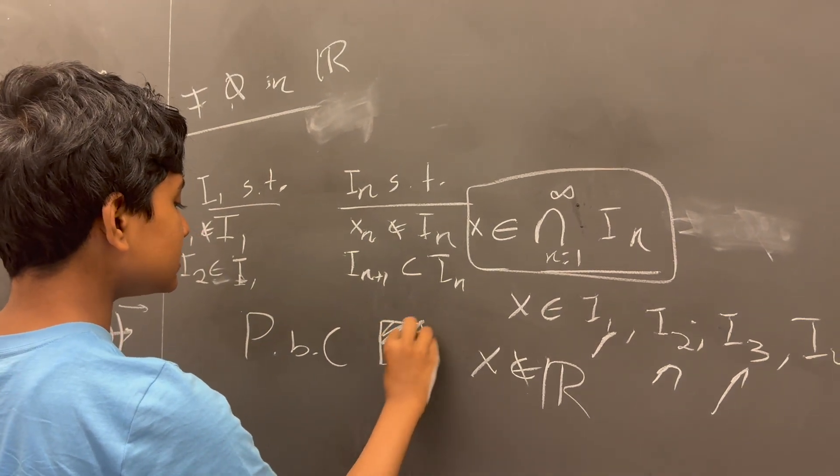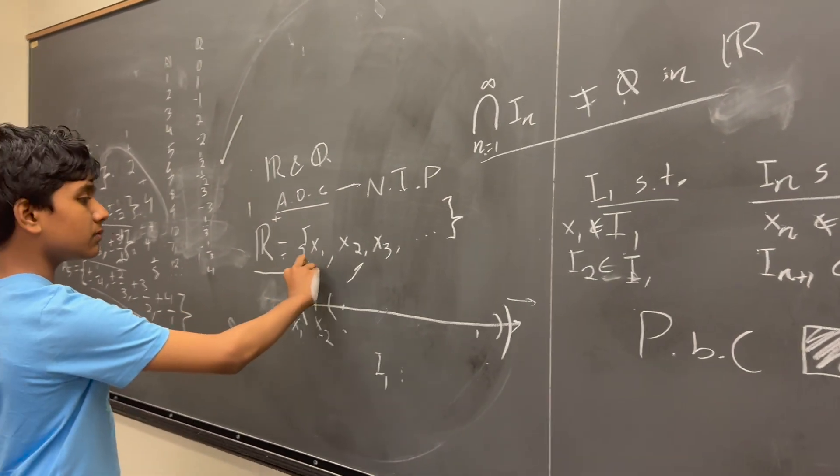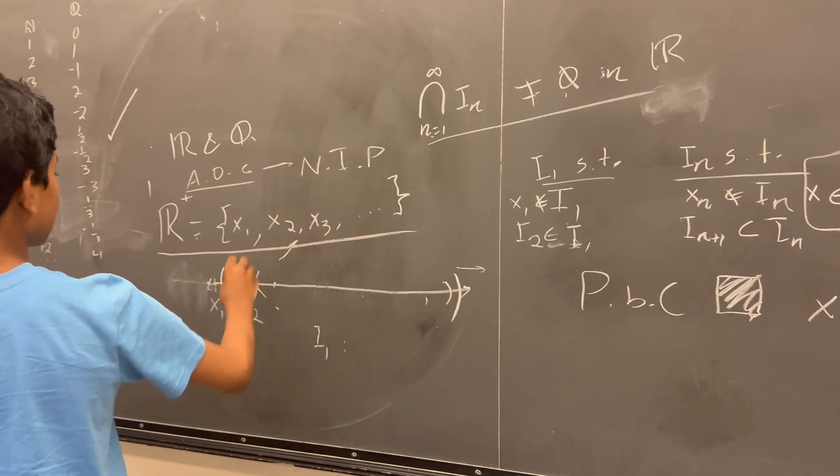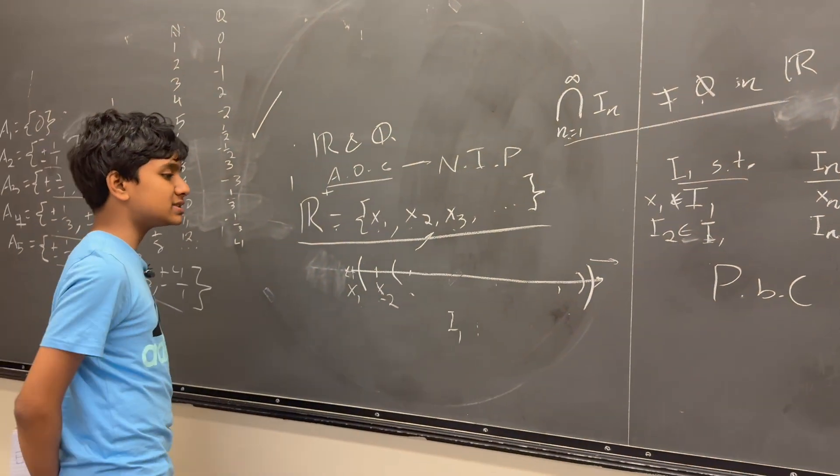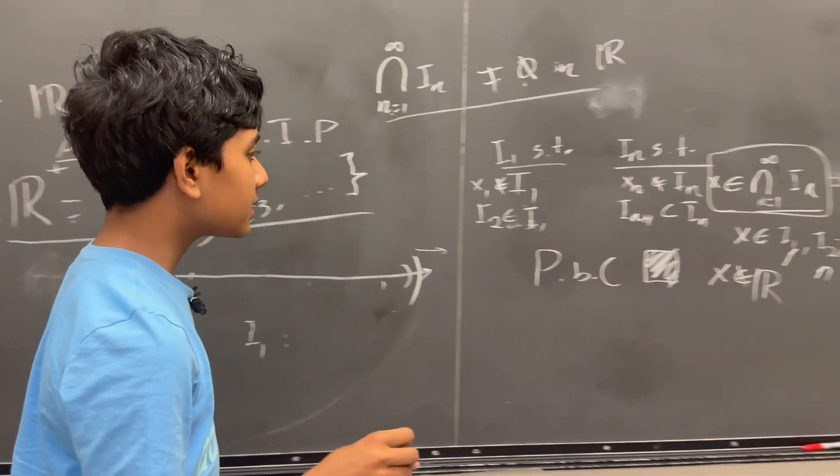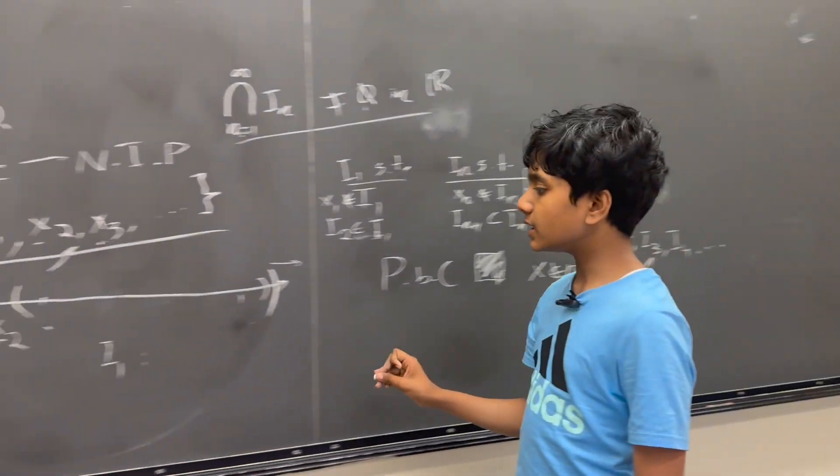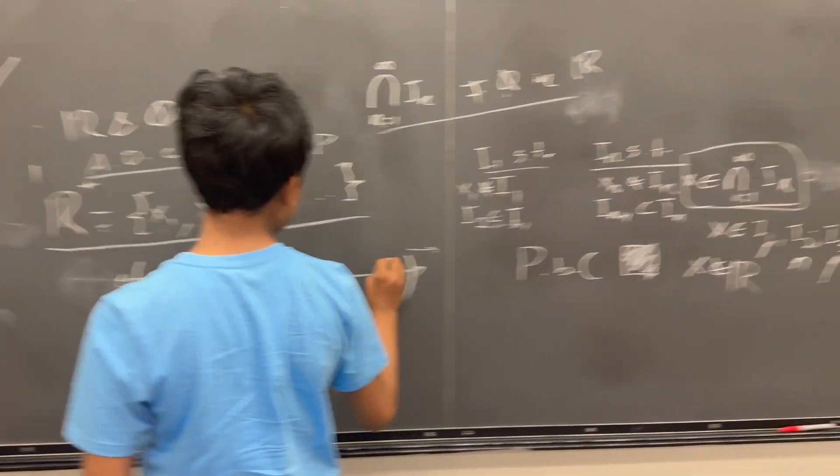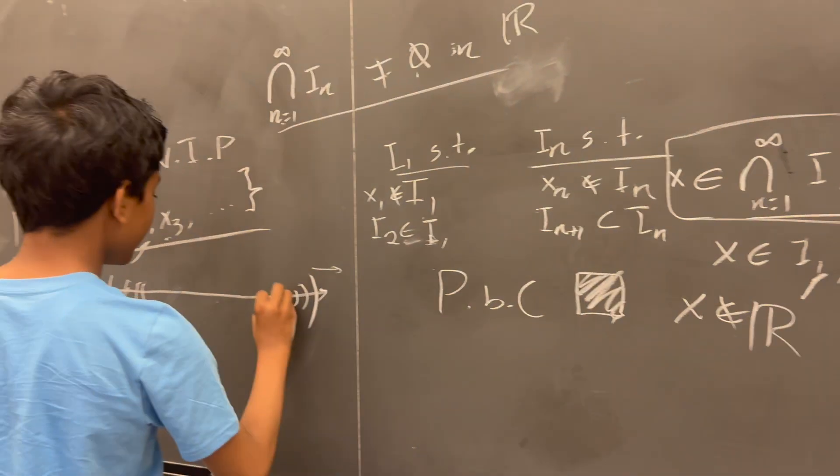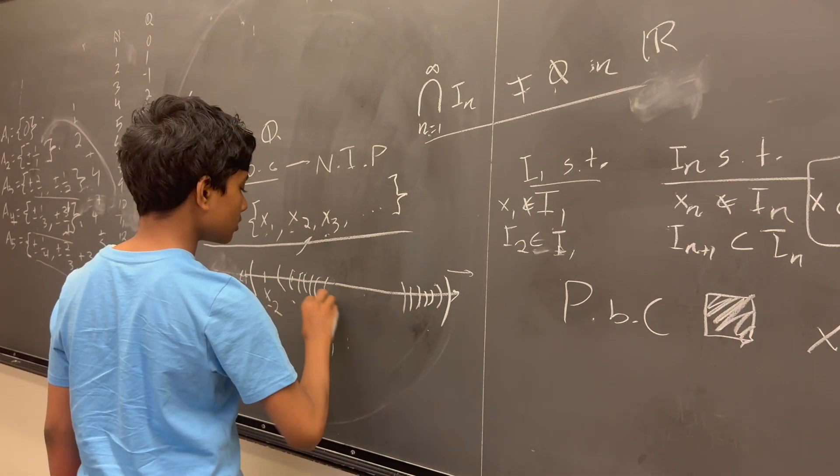Essentially, what we said here was that the real numbers cannot just be an enumerable set, even if it's infinite. It can't be enumerated, because otherwise, the axiom of completeness would be violated. We can draw a set of infinite intervals, which are all proper subsets of one another.